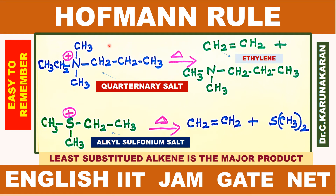Let us study Hoffman rule. This is just opposite of Zaitsev's rule. For example, quaternary ammonium salt and alkyl sulfonium salt on heating gives least substituted alkene as the major product. In Zaitsev's rule, the highly substituted alkene is the major product.